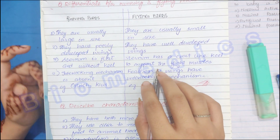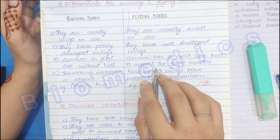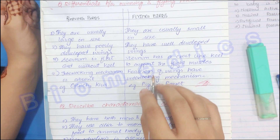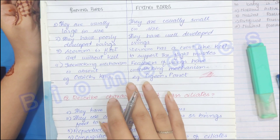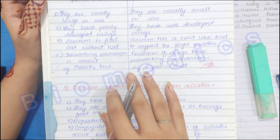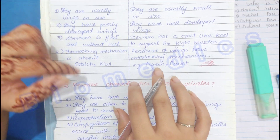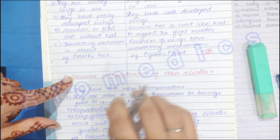Flying birds have interlocked feathers, but running birds do not. Examples: running birds include ostrich and kiwi; flying birds include pigeon and parrot.